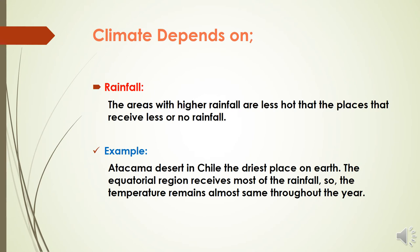Rainfall is a huge factor in determining and affecting the temperature of a place. Areas with higher rainfall are less hot than places that receive less or no rainfall. For example, the Atacama Desert in Chile is the driest place on Earth because it has not received rainfall for many centuries. On the other hand, the equatorial region receives rainfall throughout the year, so the temperature there remains almost the same throughout the year.